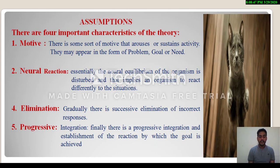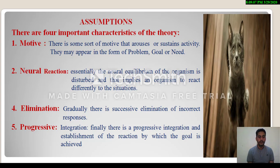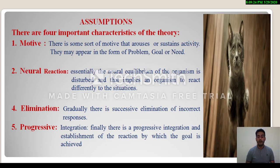Before going through the theoretical framework, let's understand the assumptions and characteristics of the trial and error theory propounded by E.L. Thorndike. This theory is based on four key characteristics or assumptions. Number one: motive. According to Thorndike, there is some sort of motive that arouses or sustains activity. It may appear in the form of a problem, goal, or need.